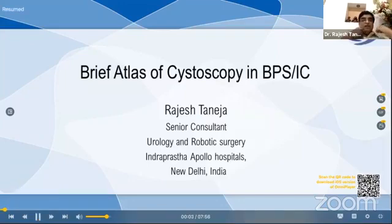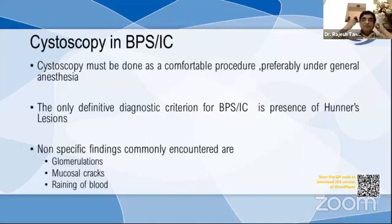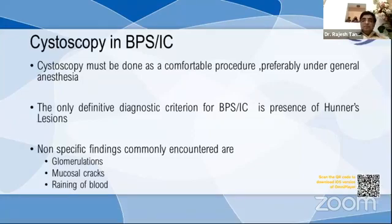In bladder pain syndrome and interstitial cystitis, cystoscopy must be done as a comfortable procedure, preferably under general anesthesia. The only definitive diagnostic criterion for BPS/IC is the presence of Hunner's lesions. Non-specific findings commonly encountered are glomerulations, mucosal cracks, and draining of blood.